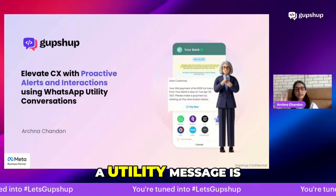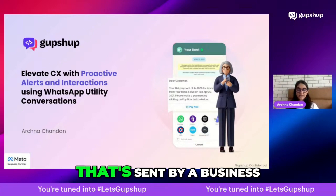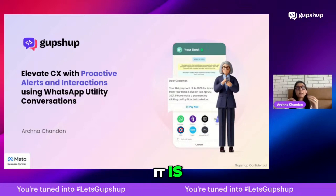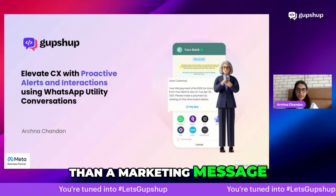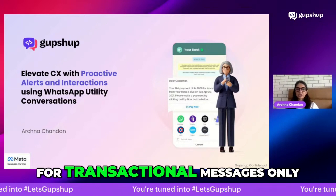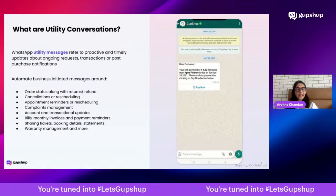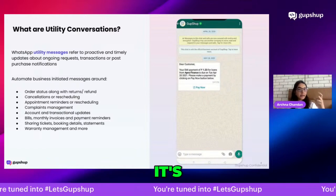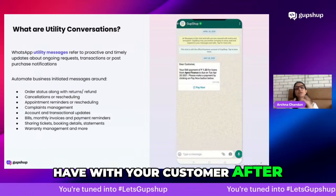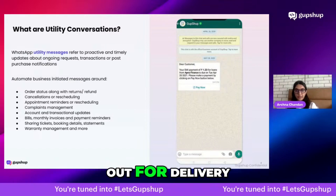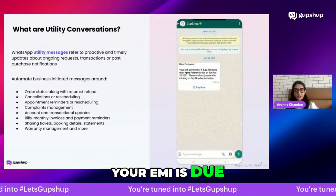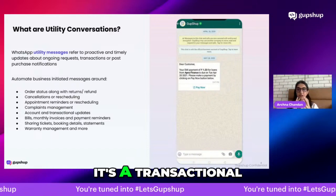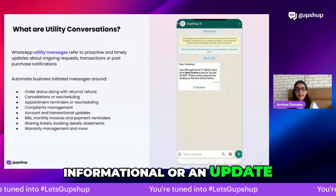A utility message is a business-initiated message sent by a business to an end consumer. It is more than 50% cheaper than a marketing message, which means it's to be used for transactional messages only. It covers all the communication you need to have with your customer after a purchase — order confirmed, order out for delivery, EMI due — that's the premise of a utility conversation.